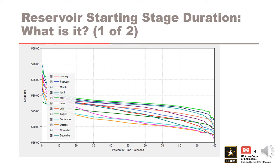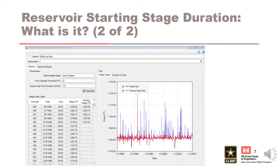Duration curves are typically calculated for seasonal, monthly, or annual time periods. Here we are trying to find the monthly reservoir starting stage duration, which will be used to sample the initial stage for a reservoir routing simulation based on the sample month in which the flood event occurs. Here is what the monthly stage duration curves may look like.